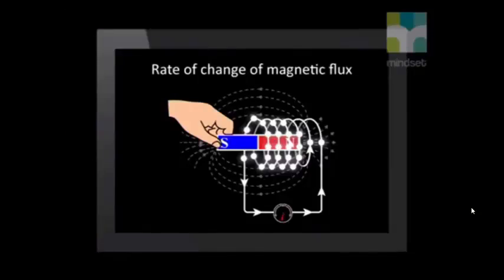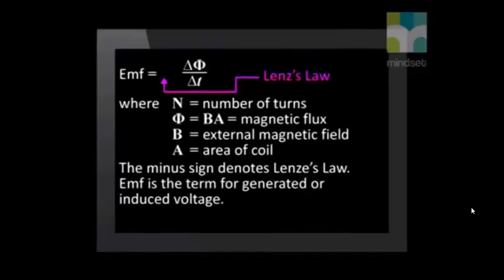Once we had covered magnetic flux, we were able to understand Faraday's Law. This says that when a magnetic field moves relative to a conductor, an EMF is induced in the conductor. In other words, the induced EMF in the conductor is directly proportional to the rate of change of the magnetic flux. The magnitude of the induced EMF is given by Faraday's Law of electromagnetic induction, and it depends on the rate of change of the magnetic flux and the number of turns on the solenoid.